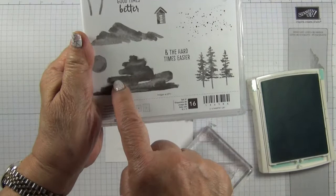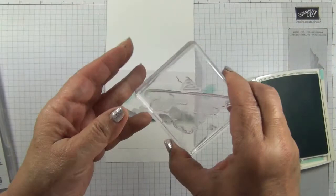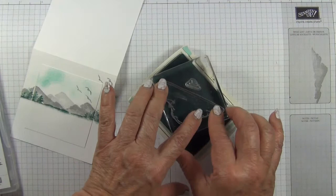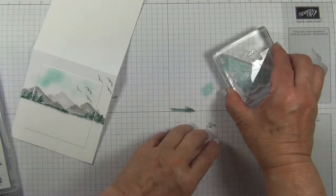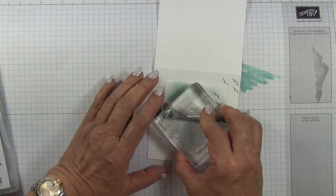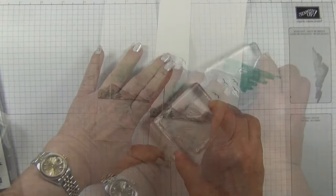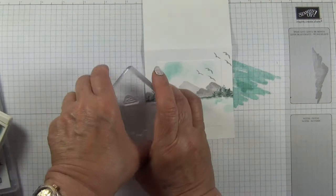I'm going to use this stamp upside down to stamp the water in soft sky. Stamp off, stamp on, stamp off again.